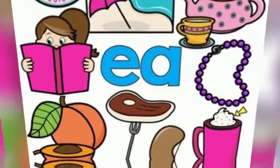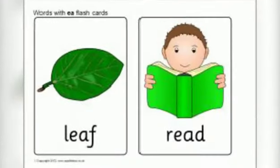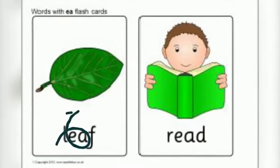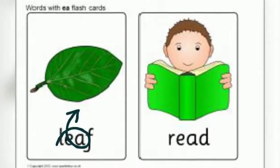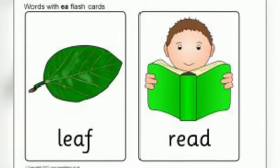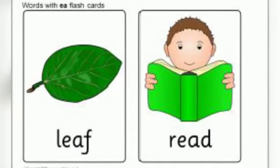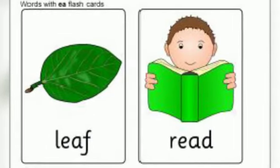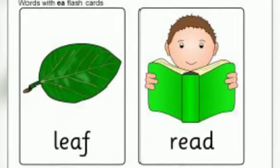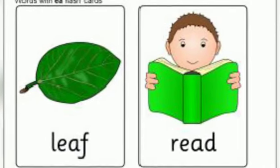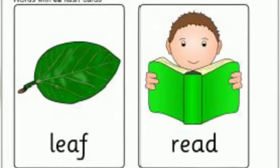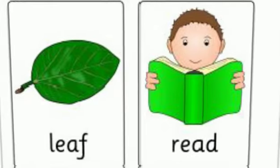Now let's read some words with EA. Leaf. L, E, A, F — leaf. Read. R, E, A, D — read. Here, EA is also making the long E sound.